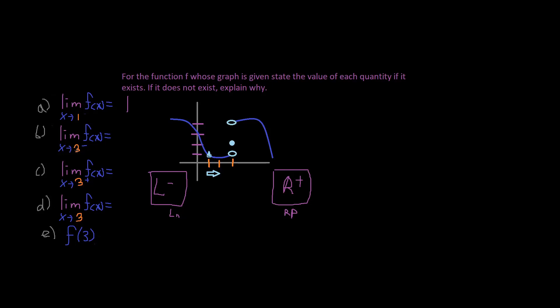So it says 3 approaching from where? The left-hand side. Alright, so it's going to be 1. Alright, 3 approaching from the right-hand side, it's going to be 4. Alright, because it's going like this. The limit is going over here.